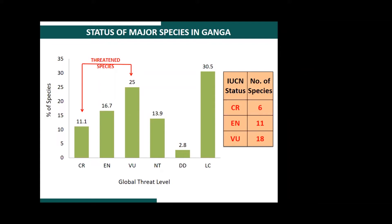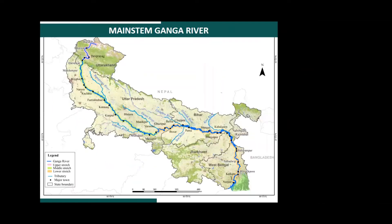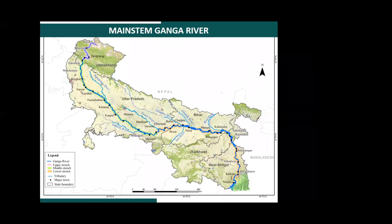In layman's terminology, we say that the Ganga is divided into the upper stretch, which is in the Himalayas, then the middle stretch from Haridwar till Varanasi, and the lower stretch where it joins the Bay of Bengal. Whenever I discuss the Ganga river, I'll be speaking in terms of the upper stretch, middle stretch, and lower stretch. The upper stretch is basically the Himalayas, while the middle and lower stretches cover the Gangetic plains and a little bit of the coastal areas.